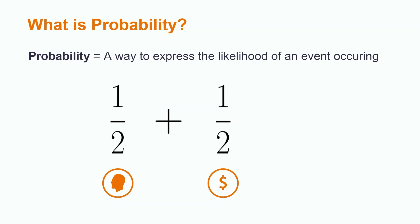For example, if we flip a coin, we have two potential outcomes, heads or tails. The probability of heads is ½ and the probability of tails is ½. And ½ plus ½ adds up to 1.